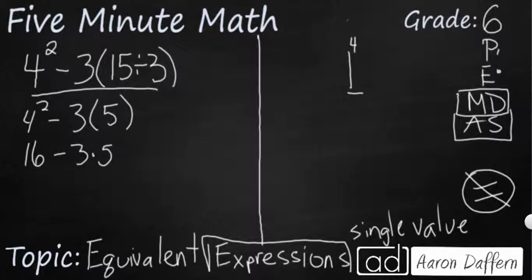So now we have multiplication and division. So we are going to look at this 3 times 5. So it is 16 minus 3 times 5 resolves to 15. So really it is 16 minus 15 which simplifies to 1. So this entire convoluted expression simplified down to a single value of 1. And that is what expressions do. They simplify down to a single value.